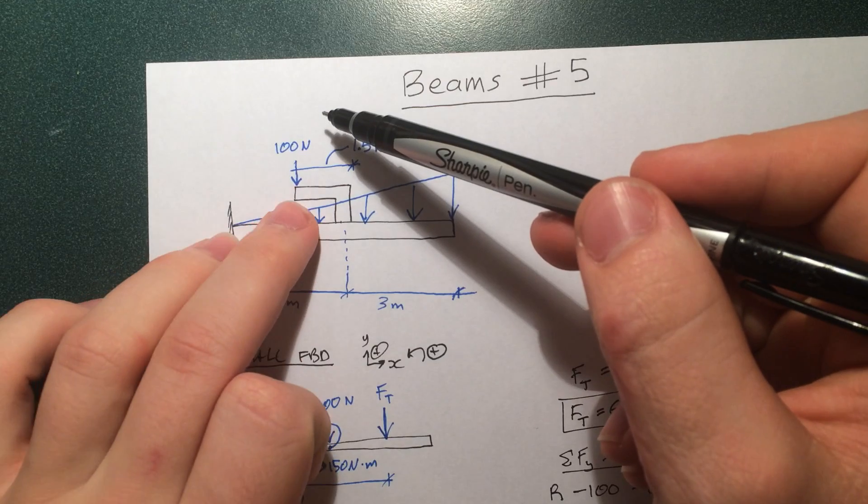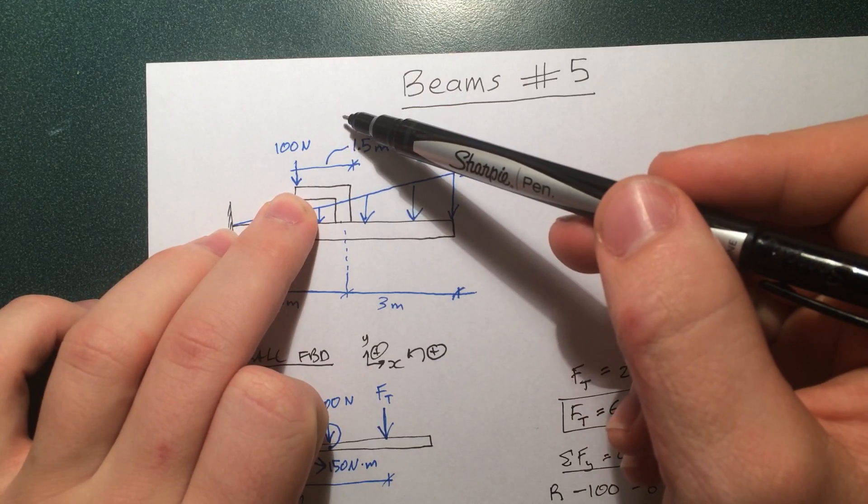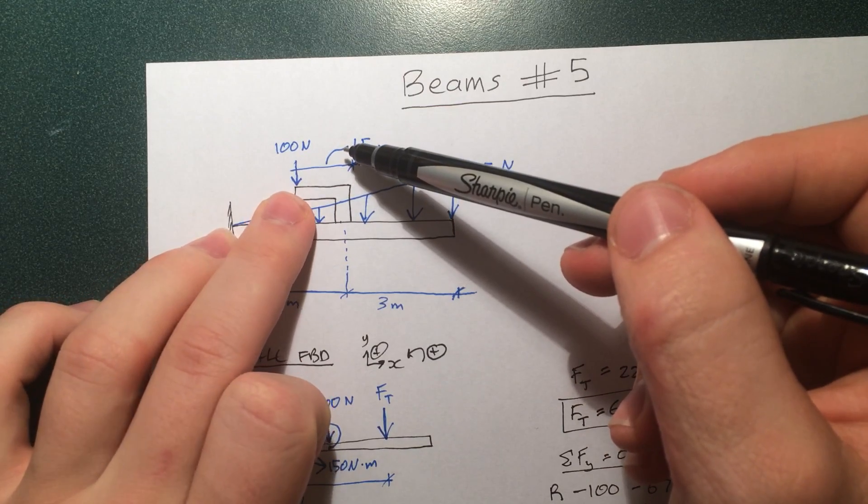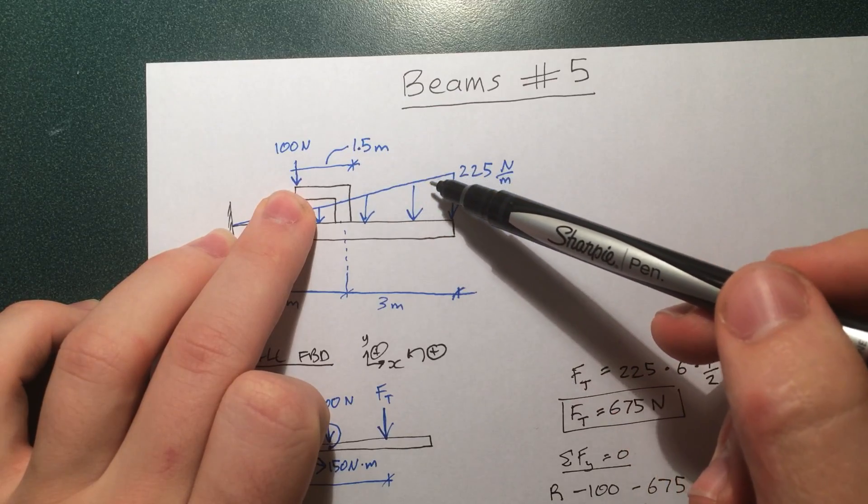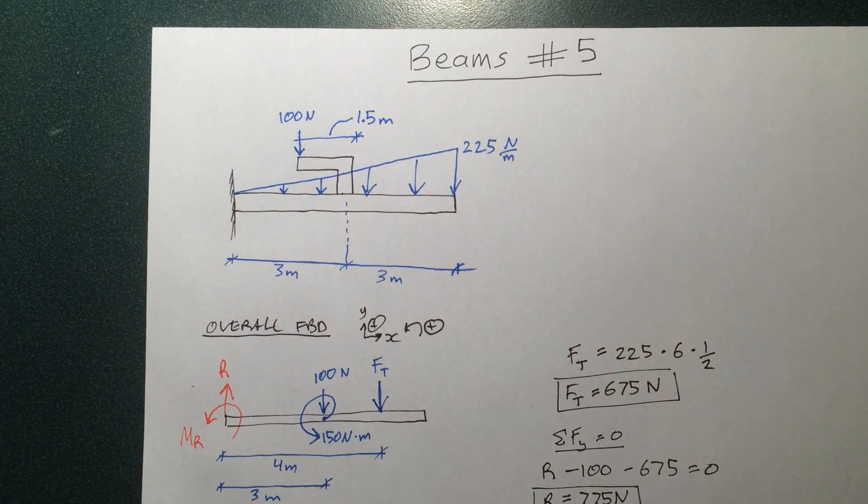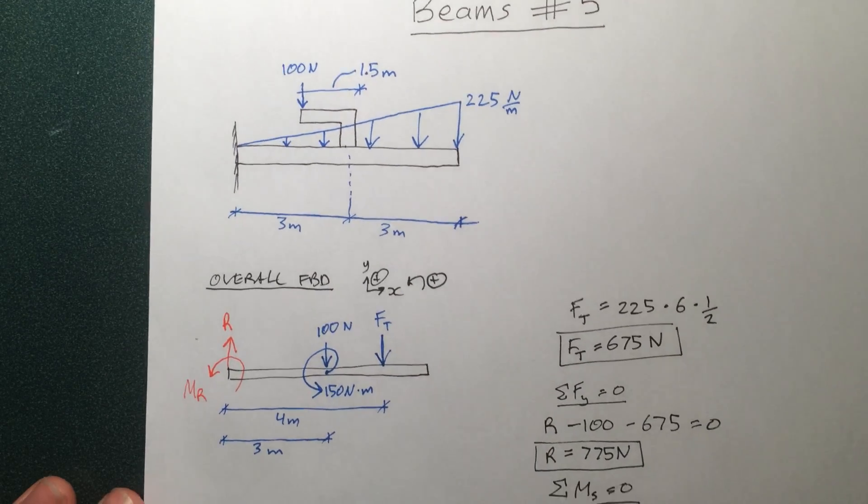And then here, another 100 newtons pushes us down, so it's going to drop. And then we keep on getting pushed down at a greater rate, and then it's going to drop us all the way down to zero at the very end of the beam. Because there's no reason to be shear force at the end of the beam. And the same thing for the bending moment.